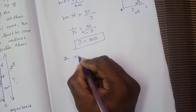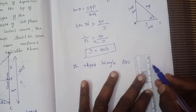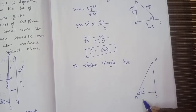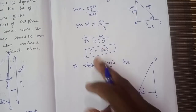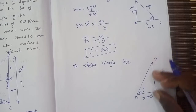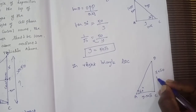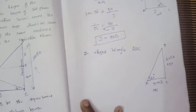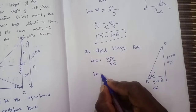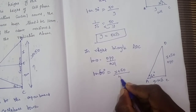Next, consider triangle ADC. The angle is 60 degrees. In this right triangle ADC, AC equals y equals 50√3. DC equals x plus 50. So tan 60° equals opposite (x plus 50) by adjacent (50√3).